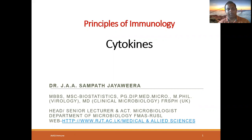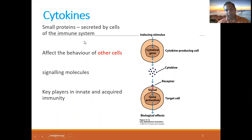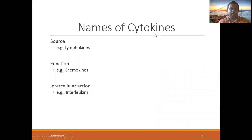Cytokines are linking innate with adaptive immune response. They are small proteins secreted by cells of the immune system. They affect the behavior of other cells. Once the stimulus is present, they produce activation of cytokine-producing genes. Cytokines act on themselves or other cells. They are signal molecules — key players in innate and acquired immunity.